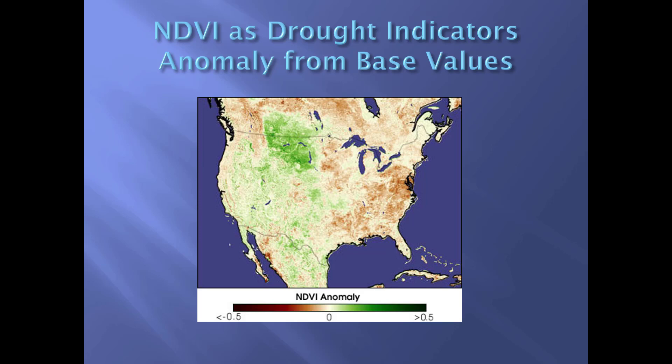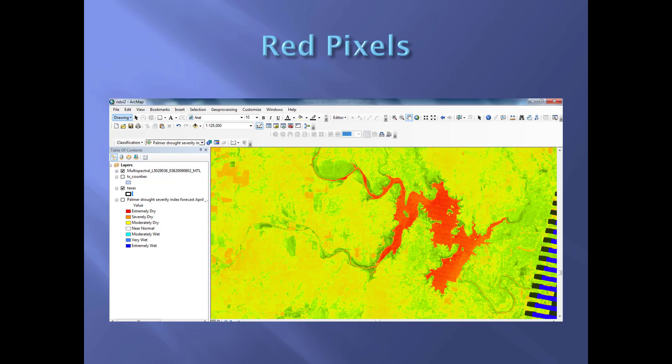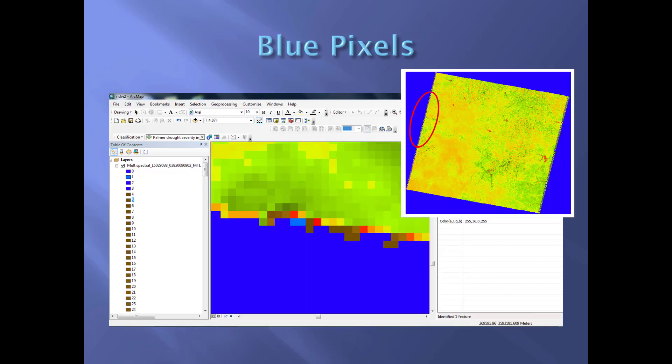NDVI can be used as a drought indicator by looking at anomalies from a base value. An anomaly is a deviation from a mean or expected value, and in this map, intensely brown or green areas show NDVI anomalies. In your lab, you will look at red pixels indicating extremely dry areas, as well as water bodies. Be aware of the edge effect — make sure you are not calculating blue pixels at the edge of your raster.